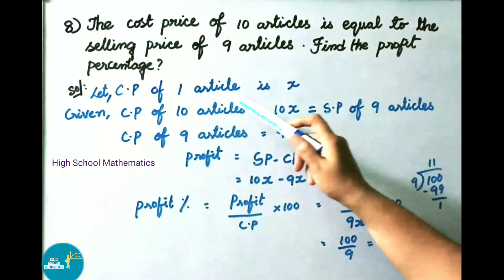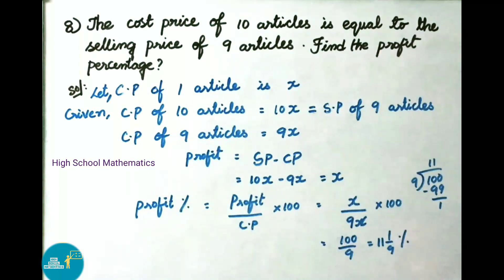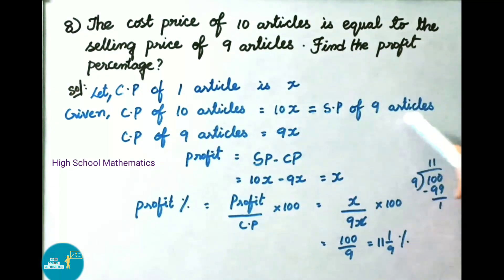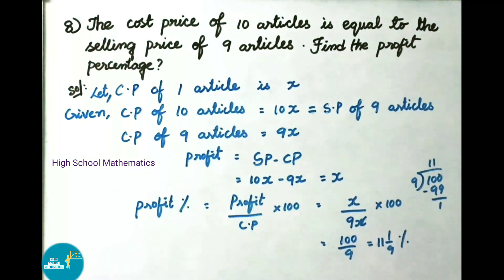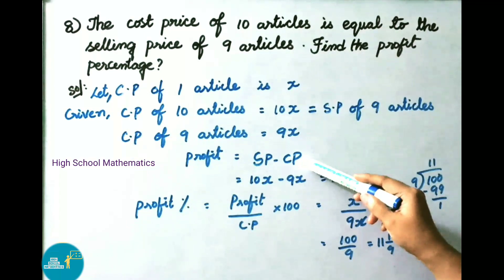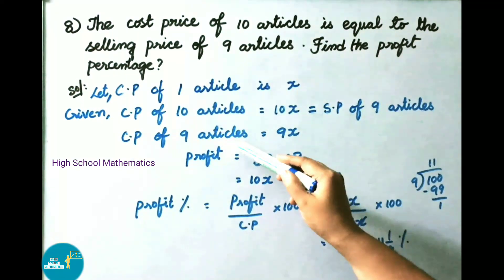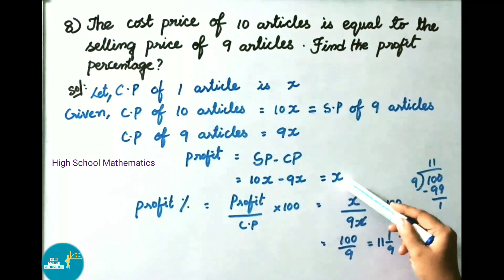Cost price of 9 articles is 9X. Profit for 9 articles equals selling price minus cost price, that is 10X minus 9X, which equals X.